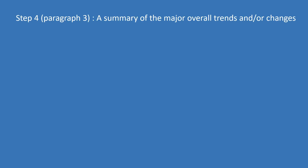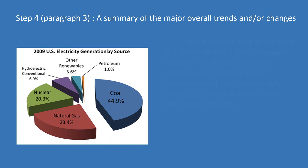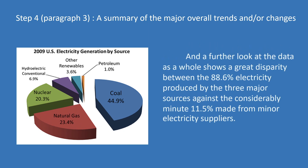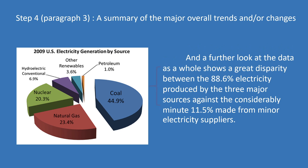Finally, step four: write a short summary of the major trends and changes. As there's only one pie chart, the trends and changes you could mention here are limited. For this chart, we may conclude it this way: "A further look at the data as a whole shows a great disparity between the 88.6% electricity produced by the three major sources against the considerably minute 11.5% made by the minor electricity suppliers."